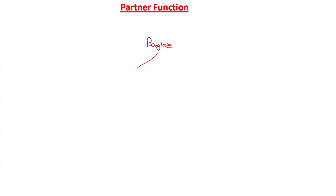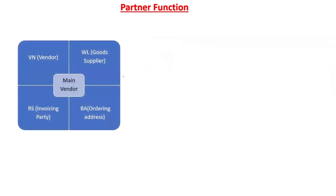Partner functions play a very important role in managing business partner relationships. Let's take an example to understand how partner functions are useful in business transactions. Suppose there is a supplier located at Bangalore, and it has two branches - one at Pune and another at Mumbai. The Bangalore office is the headquarters, and Pune and Mumbai are the two branches. To maintain multiple addresses in the master record, we can use partner functions in SAP.